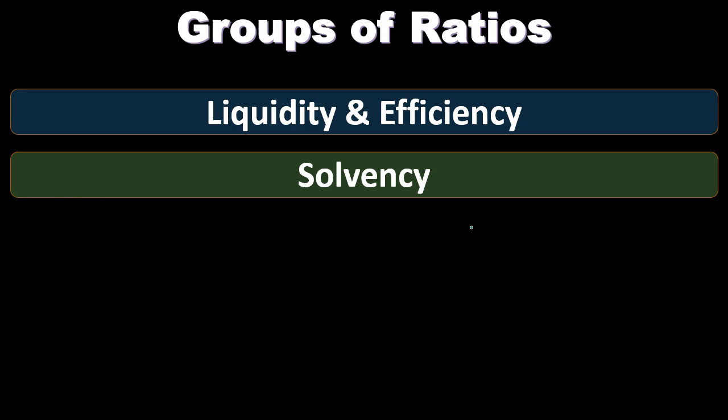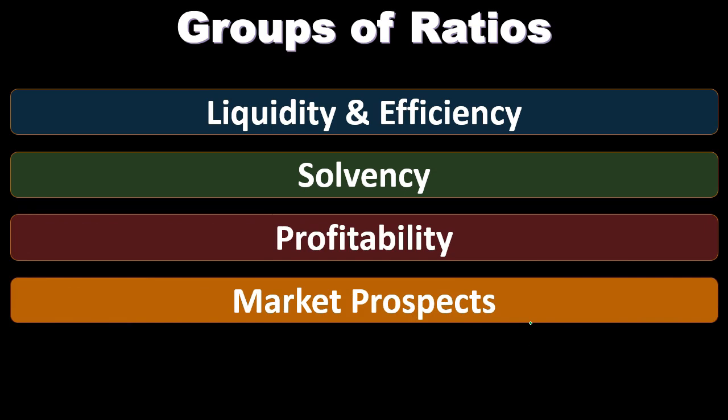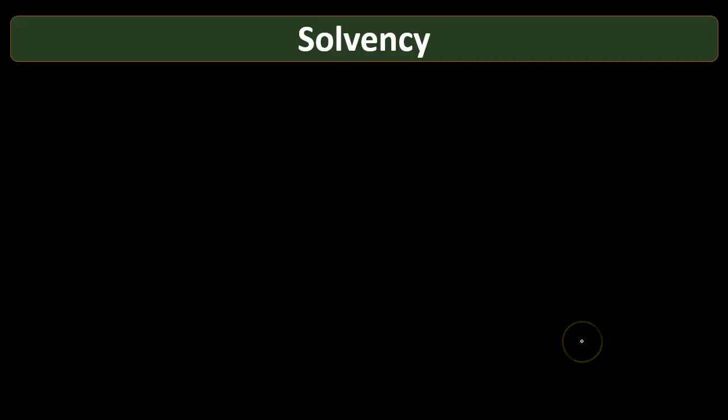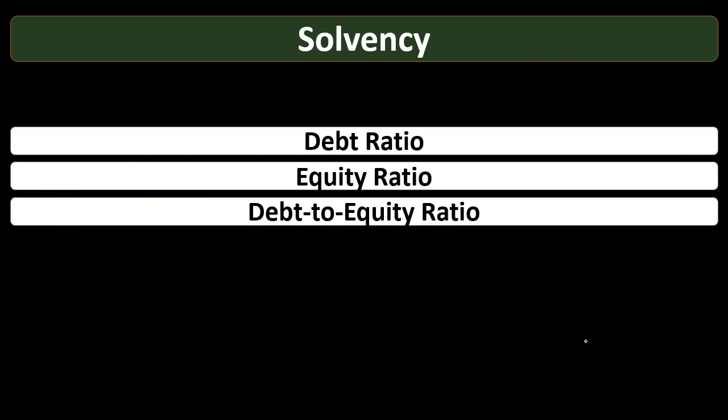When considering solvency, we're often taking into consideration the capital structure — the structure between liabilities and equity. Liabilities and equity represent who has claim to the assets: equity represents the claim by the owners, while liabilities represent the claim by third parties. The differentiation between how much of total assets is claimed by third parties versus owners is the main component of solvency calculations.